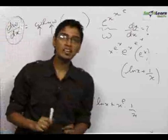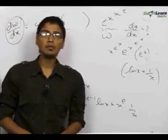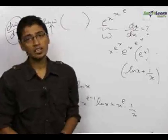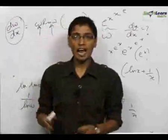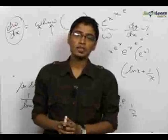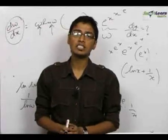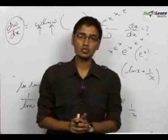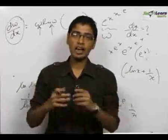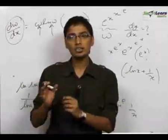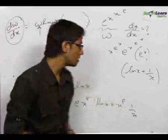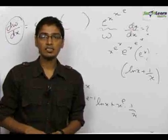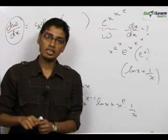We then add du by dx, dv by dx, and dw by dx to get the final answer. In general, if there are 3 or 4 functions of x added together to form y, we can find dy by dx by finding the differentials of the individual functions and then adding them together. The final answer is dy by dx equals du by dx plus dv by dx plus dw by dx.